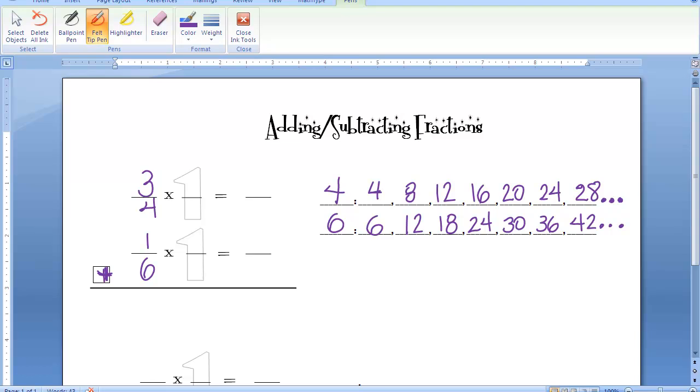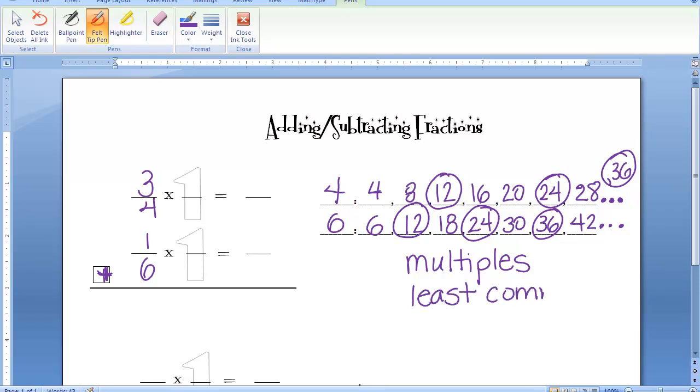So what we've done is we have listed the multiples of 4 and 6. These are called multiples. Let's circle the ones that they have in common. I can see that they have 12s in common. 24 is in common. And if I had kept going, I would have hit 36 up here. They have 36 in common as well. But what we're looking for is the least common multiple. You're looking for the one that's the smallest that they have in common, and that's the 12.